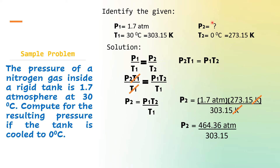So, we expect the answer to be lower. Let's see — divide 464.36 atmosphere by 303.15. The answer is 1.53 atmosphere. This is lower than the initial pressure, meaning the pressure decreased because the temperature became 0 degrees Celsius.